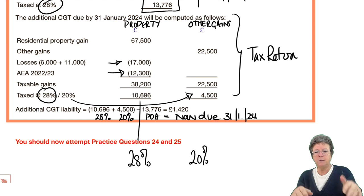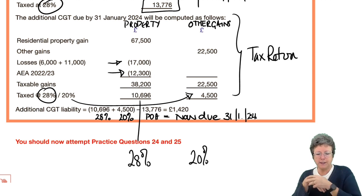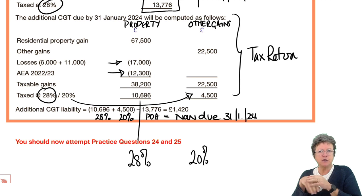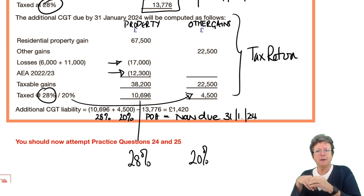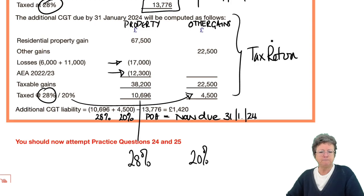You may need to go through that illustration again. We've come to the end of the chapter — the two practice questions are practice questions 24 and 25, and then we can move on to the second chapter on capital gains tax. You should be watching them in order.